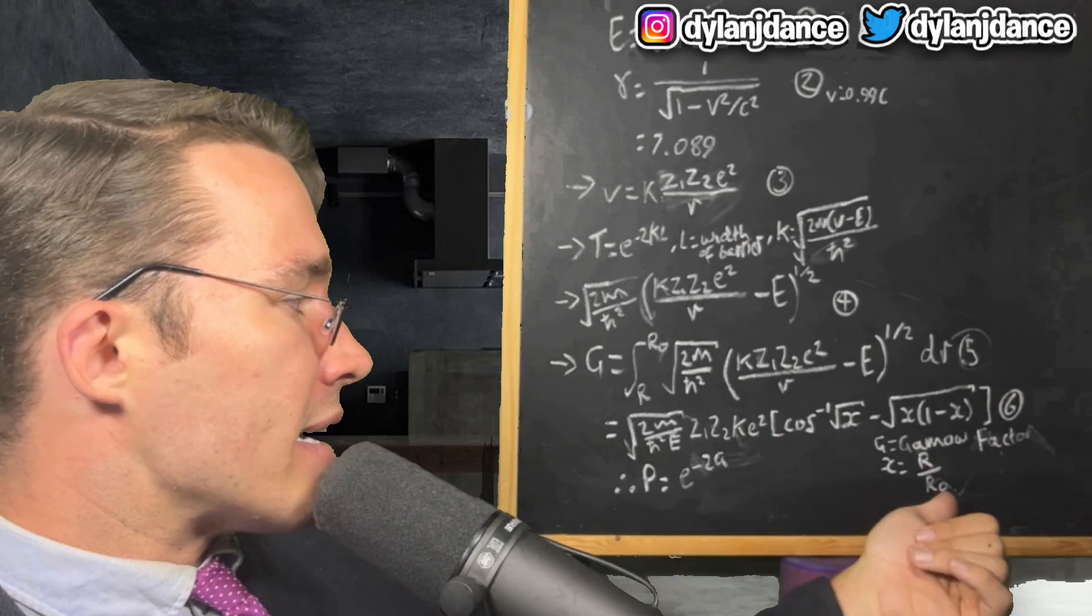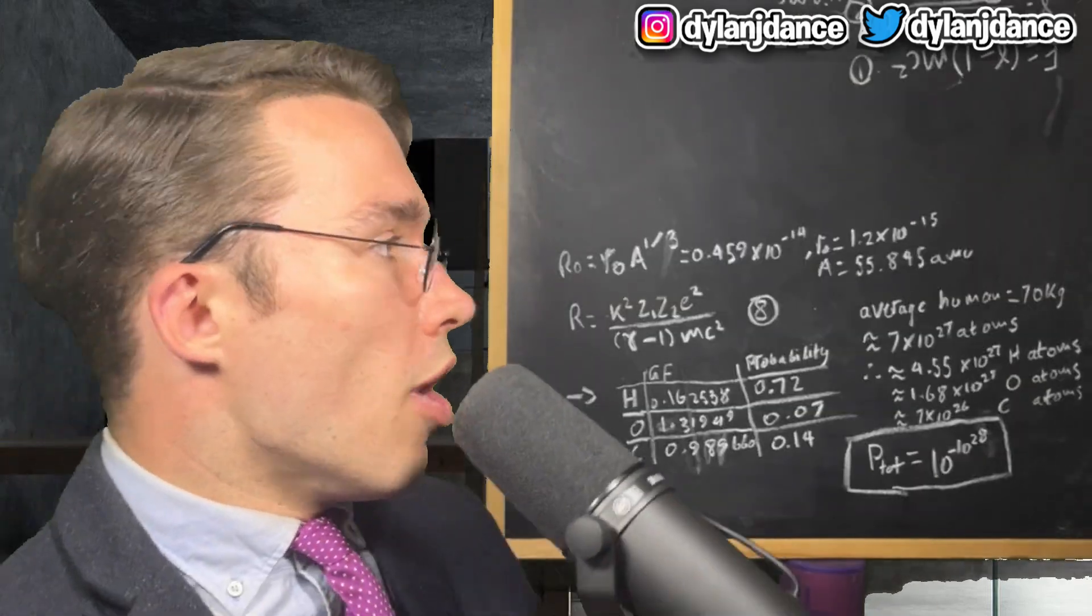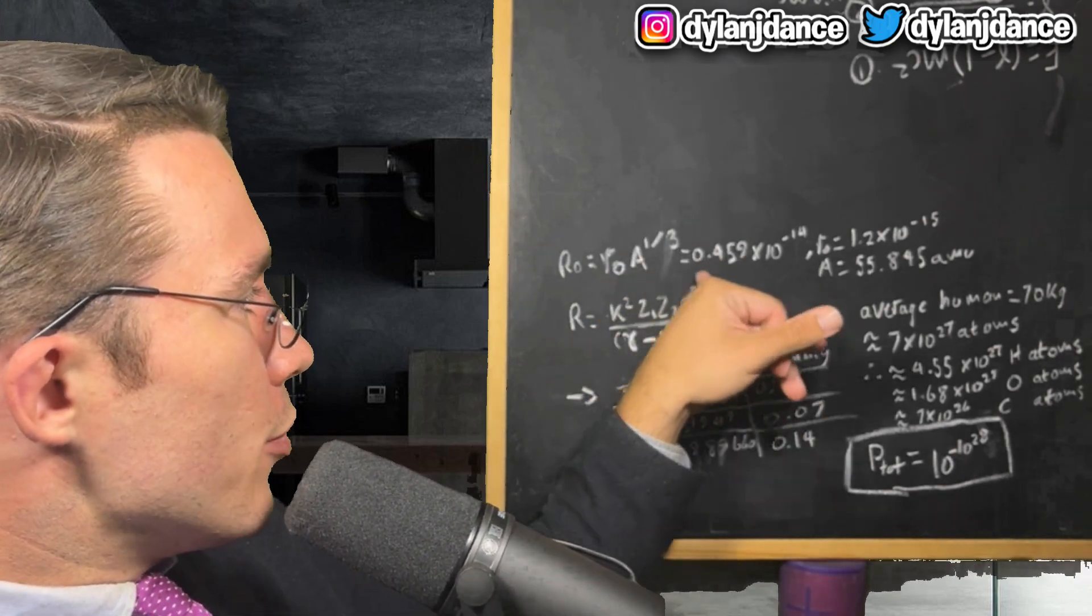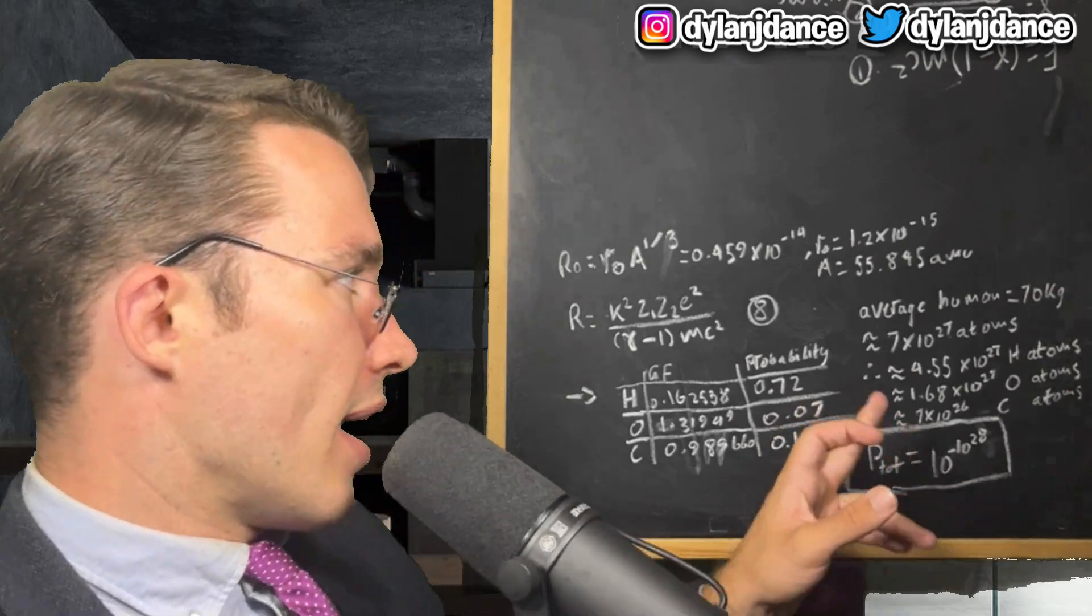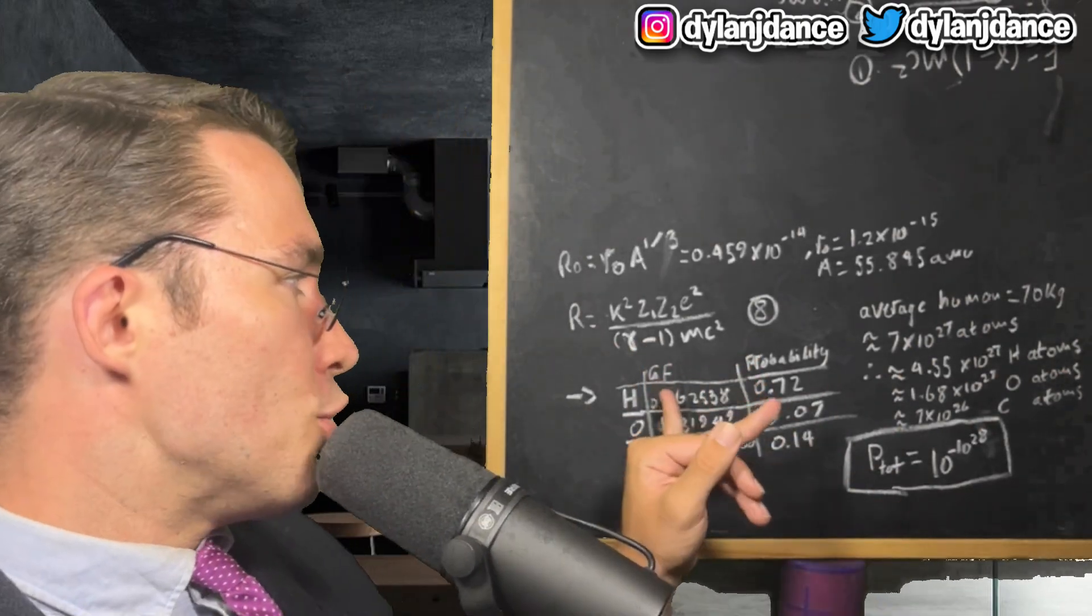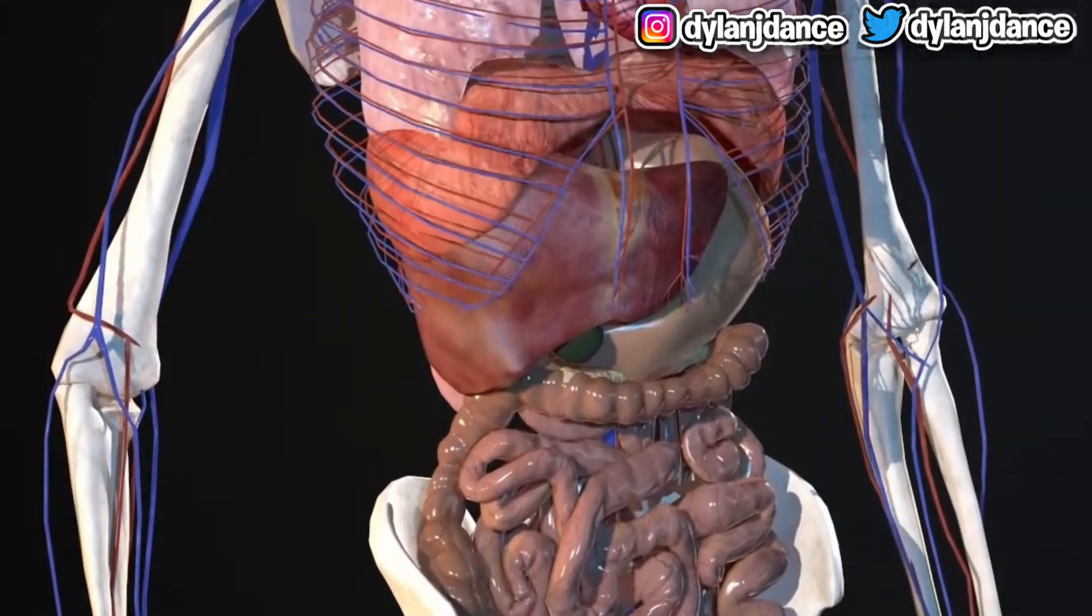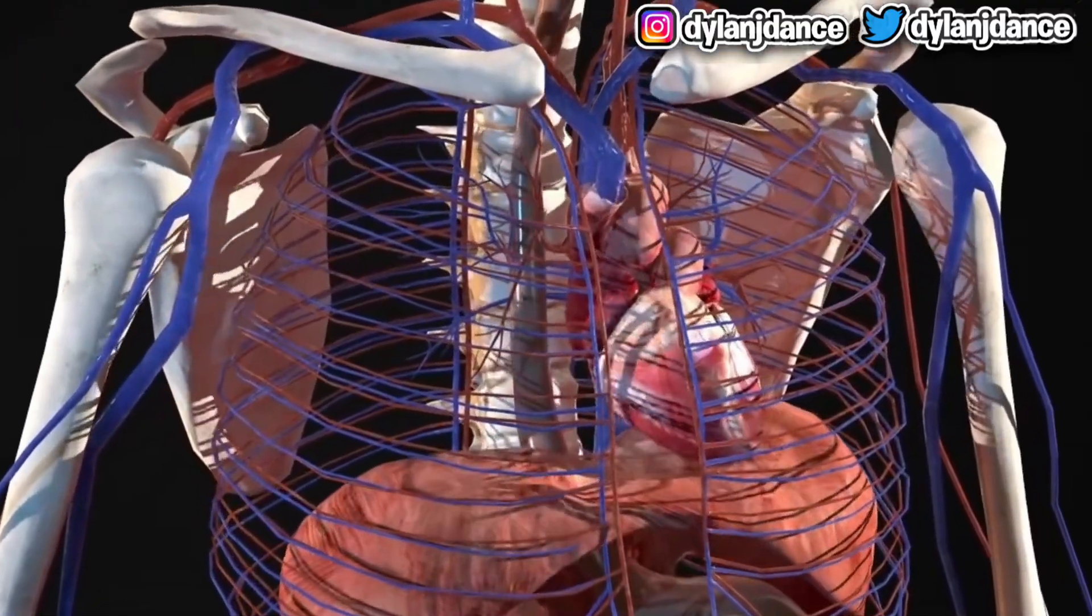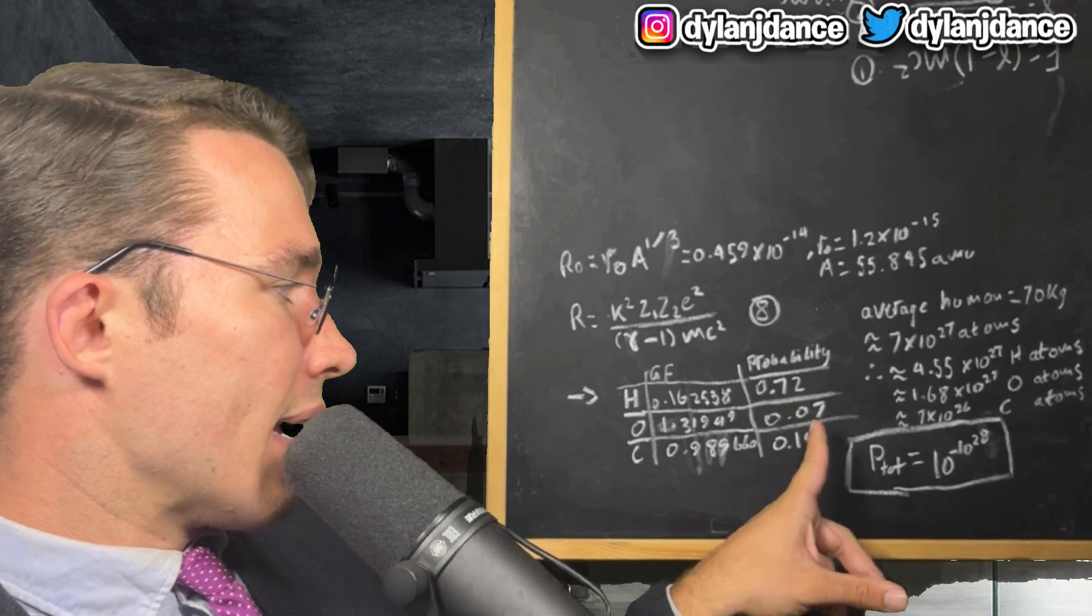This big bad boy here, we'll call equation 5. G is the gamma factor, and X is big R over big R0. Therefore, the transmission probability is P equals e to the negative 2G. R0 was calculated using the nuclear radius relation R0 equals R0A to the 1/3, which equals 0.459 times 10 to the negative 40. We're assuming the wall is made up of only iron atoms, with mass number A equals 55.845 atomic mass units. R is the distance in which the Coulomb potential equals the energy of the incoming particle. Using these values, we can calculate the gamma factor and then the probability of tunneling.